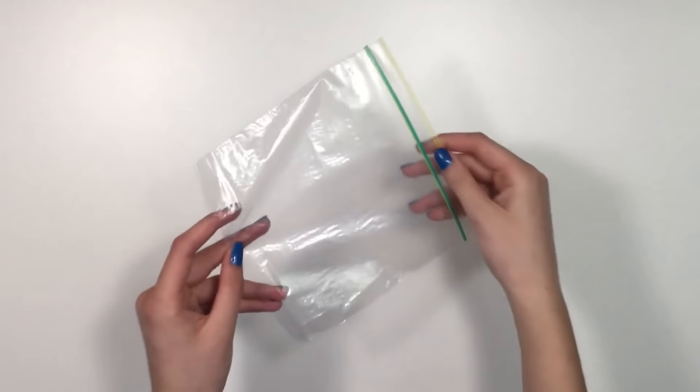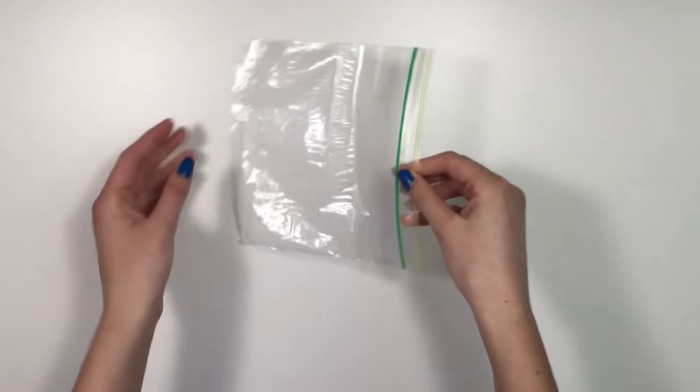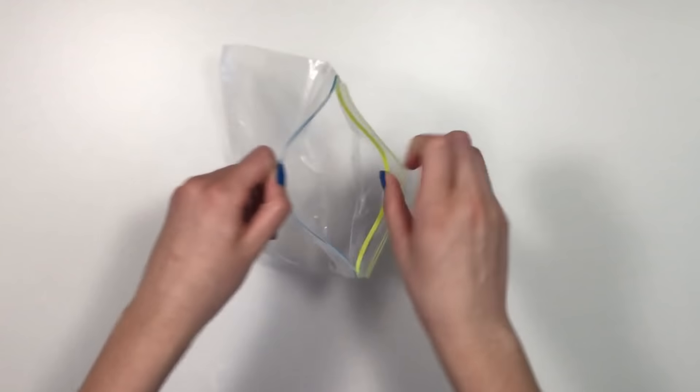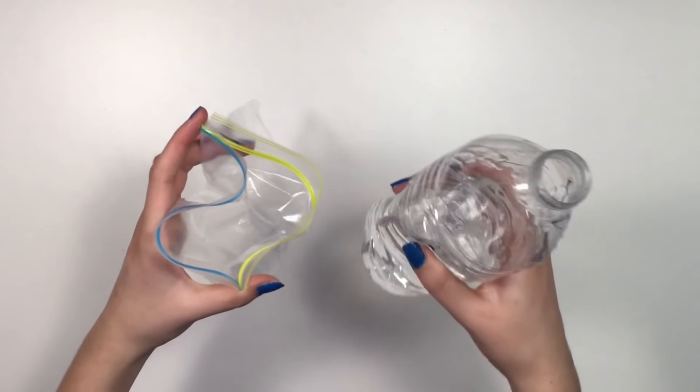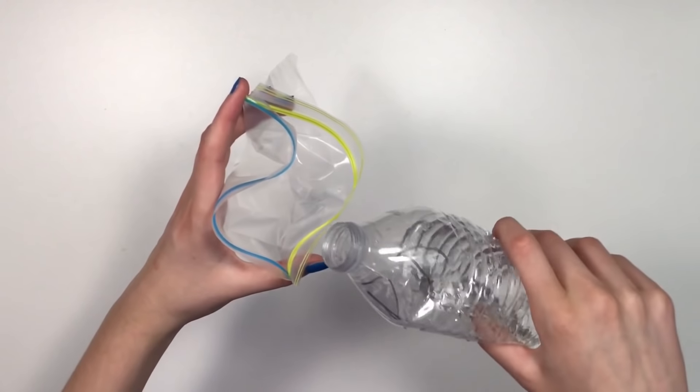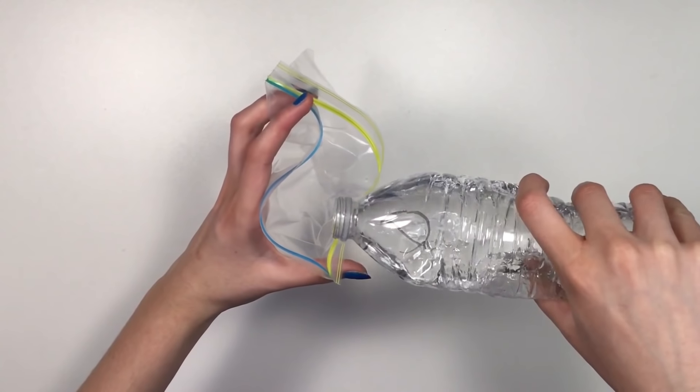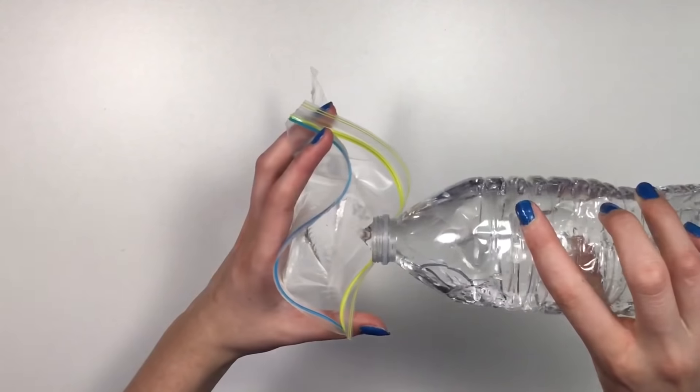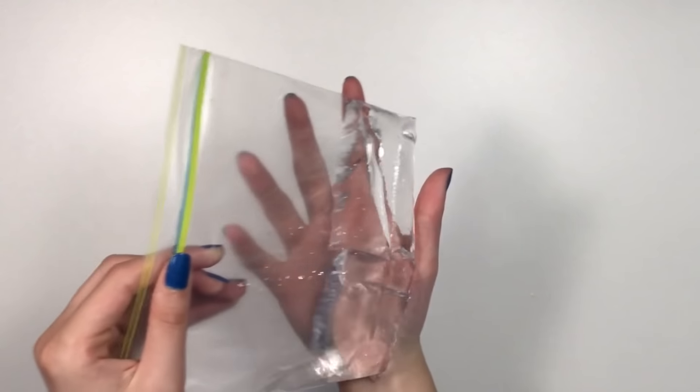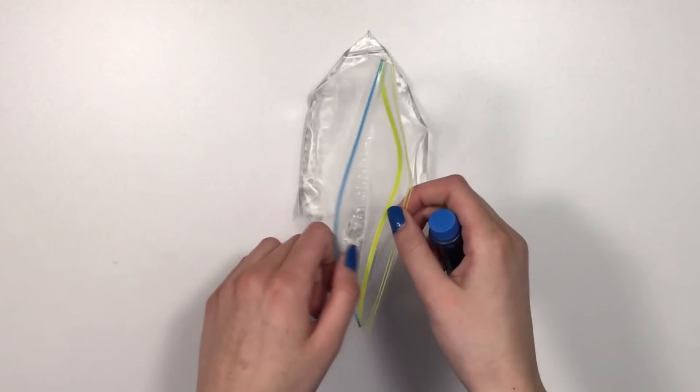First up, I'll be showing you guys how to make a DIY water snake. Grab a plastic ziplock bag, open it up, grab some regular water, and then pour it in. You're gonna fill it up about a fifth of the way.